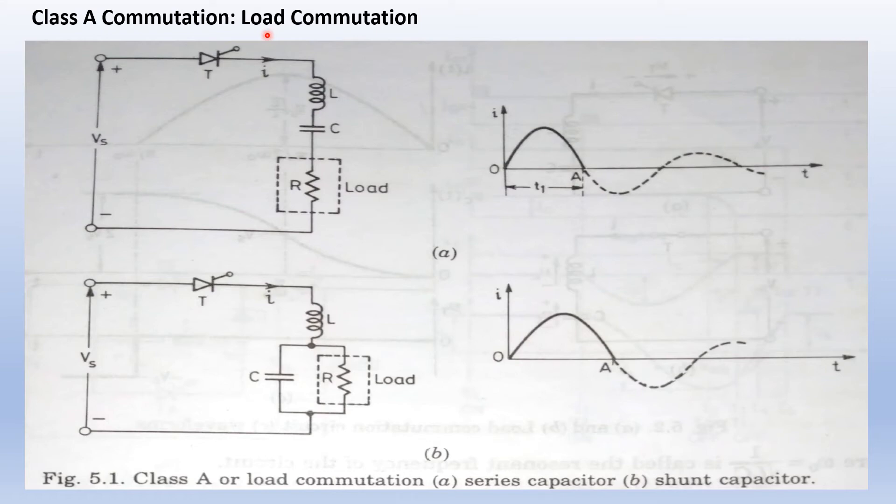Load or Class A commutation is prevalent in thyristor circuits supplied from a DC source. The nature of the circuit should be such that when energized from a DC source, current must have a natural tendency to decay to zero for load commutation to occur in a thyristor circuit. Load commutation is possible in DC circuits and not in AC circuits. Class A or load commutation is also known as resonant commutation or self commutation.